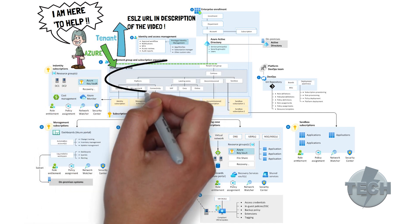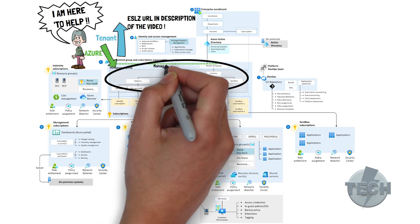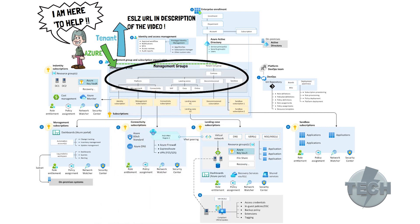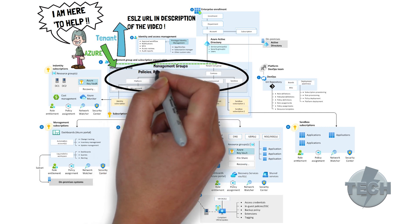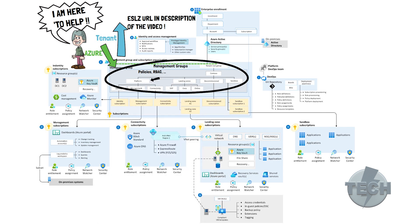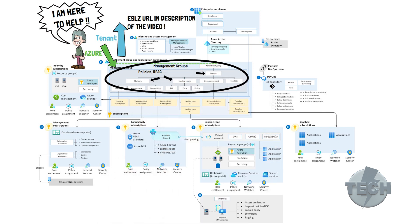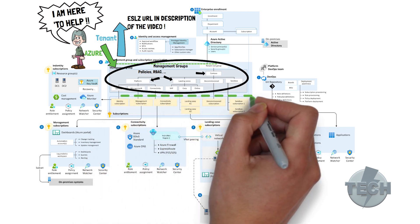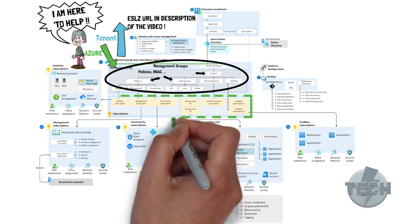Management groups — first off, we will have a look at the management groups. That's where we usually set up policies and role-based access control for the Azure subscriptions. As you can see, there's a whole infrastructure and how to set them up, which allows for unparalleled flexibility. However, in this video we will focus more on the subscription setup. So let's talk about the subscriptions.